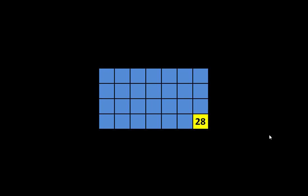Here is an array. We know that an array that is 7 by 4 will have a total of 28. And we also know that we can break 28 apart into 7 groups of 4, just like this. And when we put 7 groups of 4 together, the total is 28. And we know that we can break 28 apart into 4 groups of 7, just like this. And when we put 4 groups of 7 together, the total is 28.